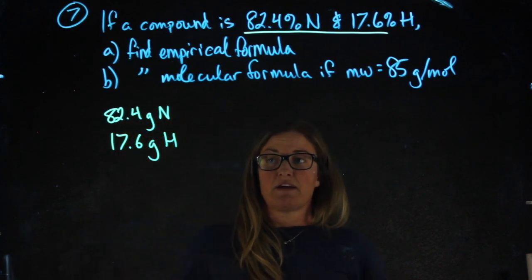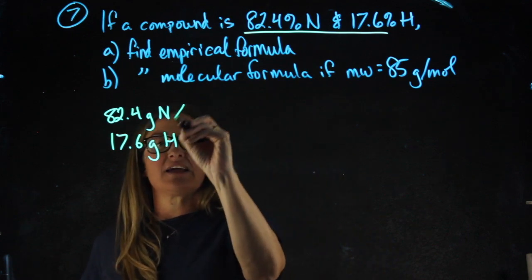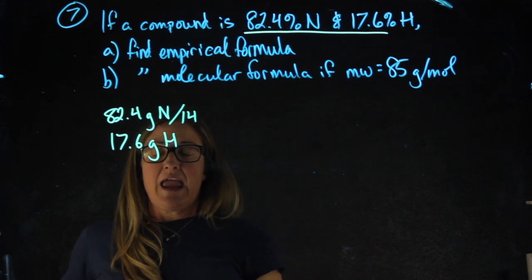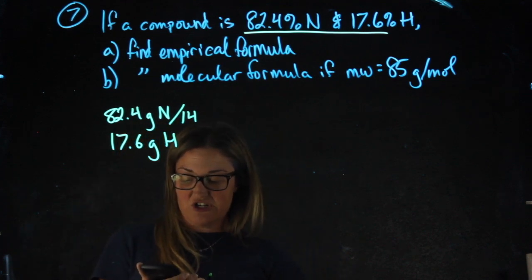What I want to find in my formula is what is the ratio of moles of one of them to moles of the other. So first, I need to get the moles of each element. 82.4 divided by 14, the molecular weight of nitrogen, will give me the moles of nitrogen.